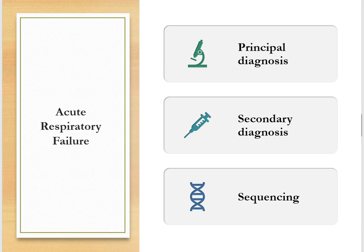Acute respiratory failure as a secondary diagnosis: this condition can be listed as a secondary diagnosis if it occurs after admission, or if it is present on admission (POA) but does not meet the definition of principal diagnosis.